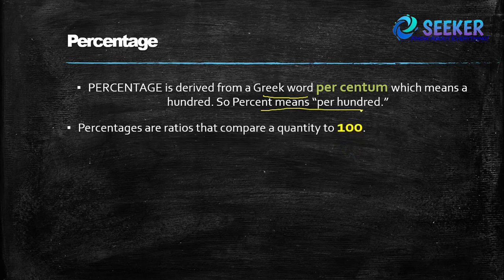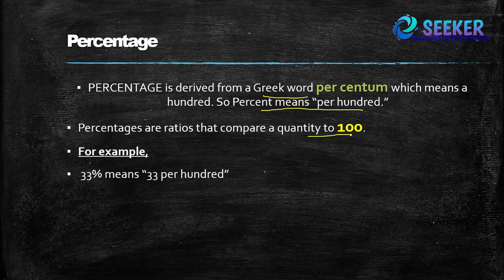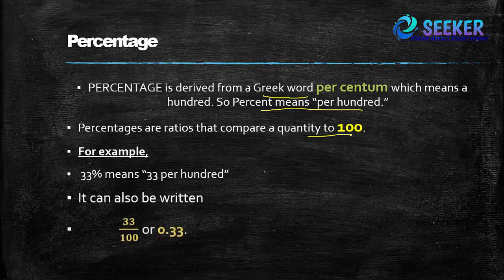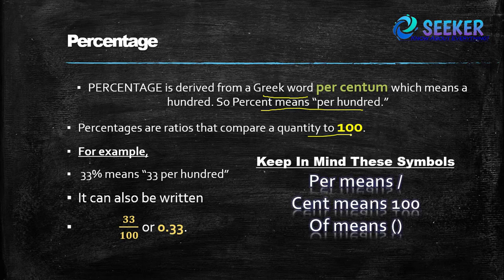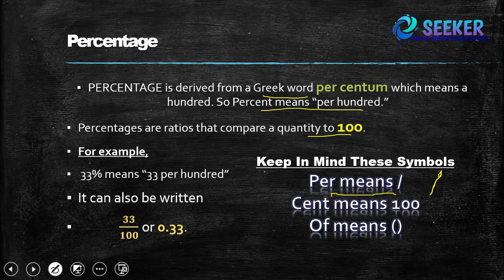Percentages are ratios — they compare a quantity to 100. For example, 33 percent means 33 per hundred, and it can also be written as 33 divided by 100, or 0.33. Keep in mind: the symbol percent means 'per' which means division, and 'cent' stands for hundred.